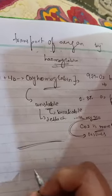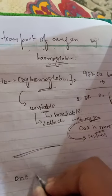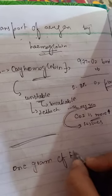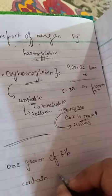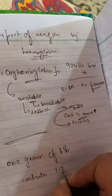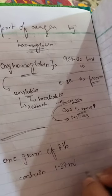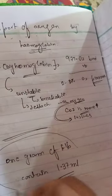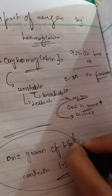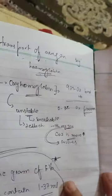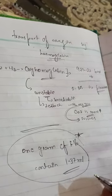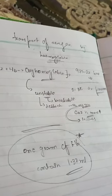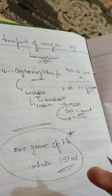If we talk about hemoglobin's oxygen-carrying capacity: one gram of hemoglobin contains 1.37 milliliters of oxygen. This is an important MCQ point. We measure hemoglobin per 100 milliliters of blood.